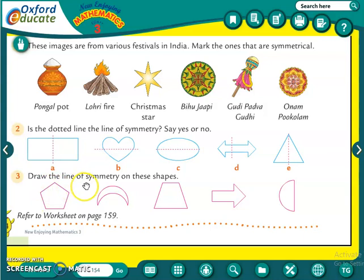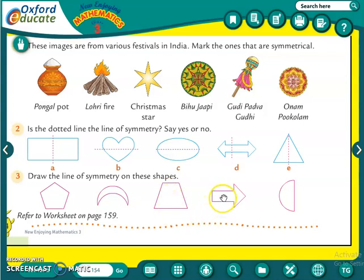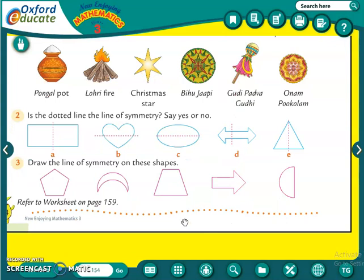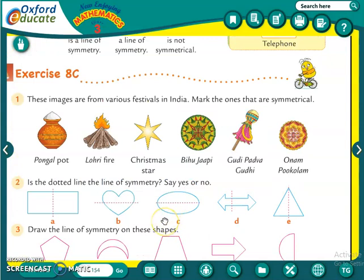Now the third exercise: draw the line of symmetry on these shapes. For the first shape, you draw a straight line in the middle. For the second shape, you can also draw a straight line in the middle. Here also you can draw a straight line. And here you draw a vertical line. I hope all of you understood what a line of symmetry is. Revise this, draw the shapes using the symmetrical line, and make sure both sides are the same. We will do the next topic in the next period. Thank you and have a nice day.